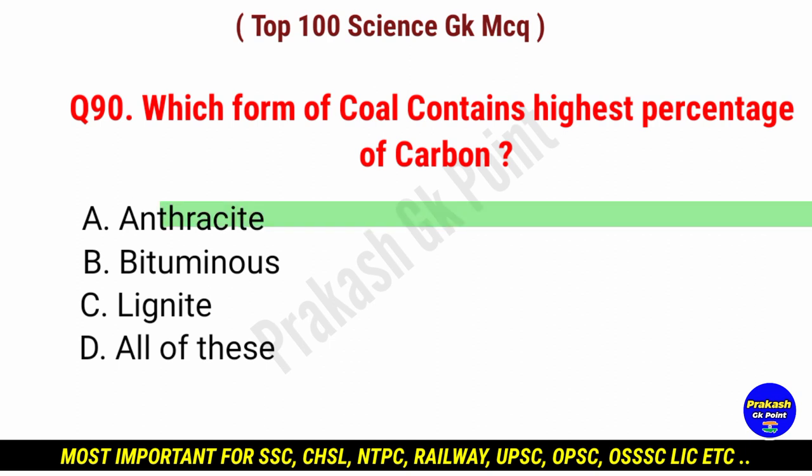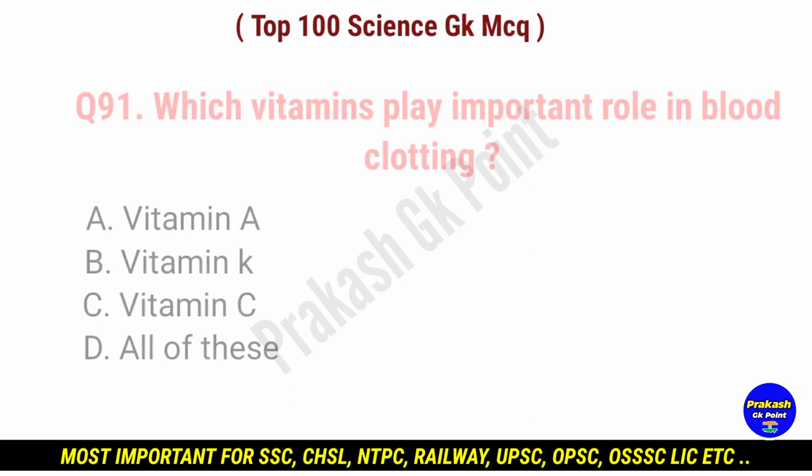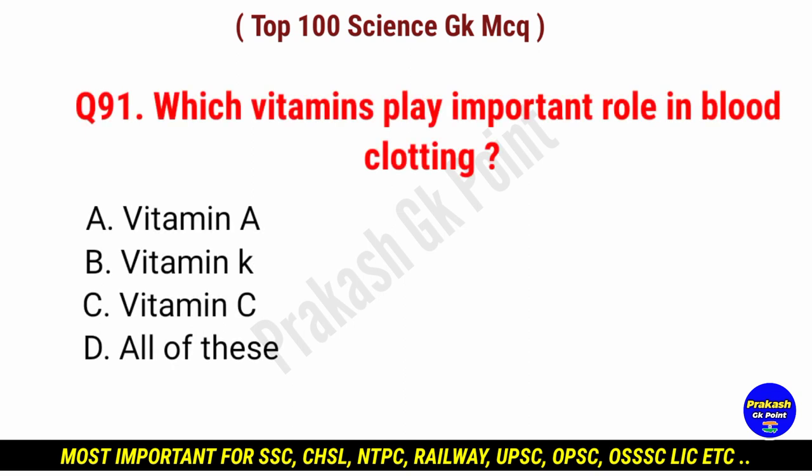Which form of coal contains the highest percentage of carbon? Answer: option A, anthracite.